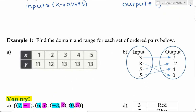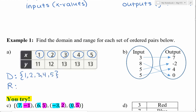Our first examples: find the domain and range for each set of ordered pairs below. When we identify the domain, we're going to write this in set notation using brackets, and we're really just listing off the x values. So the x values 1, 2, 3, 4, 5 are part of the domain. And for the range, we list off the y values. If a value like 13 appears three times, you only need to write it once.